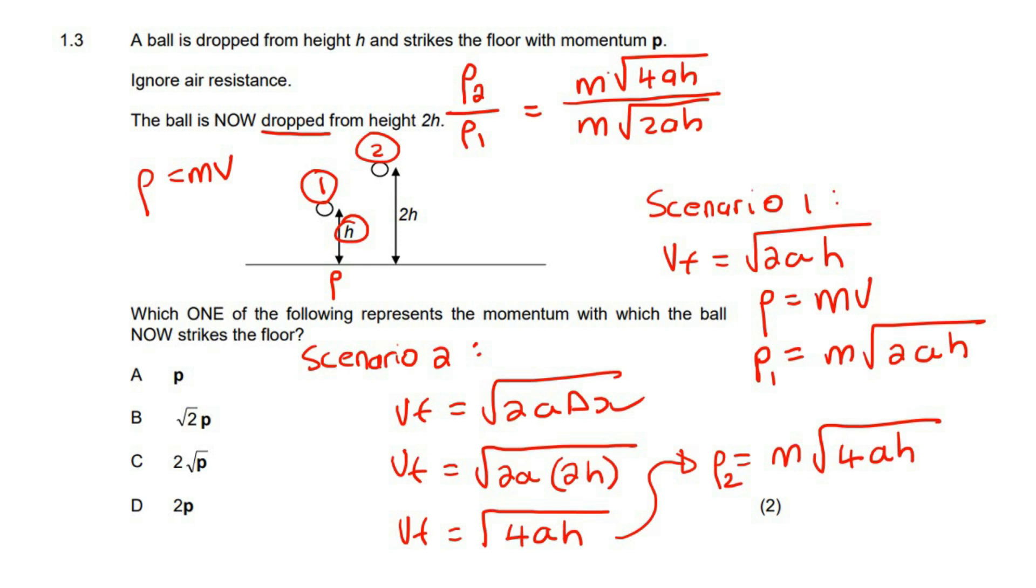Now can you see that the m's cancel? We can also cancel these ah's, because remember, even though it's in a square root, if you have square root 6 divided by square root 2, that does become square root 3, because these can cancel when it's square root in a square root.